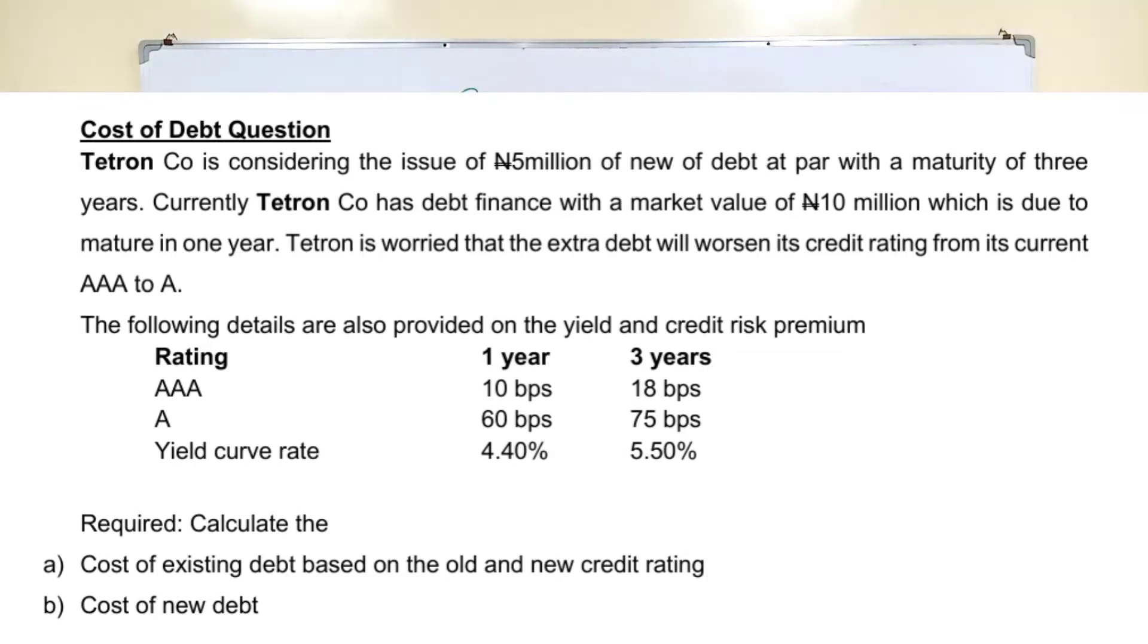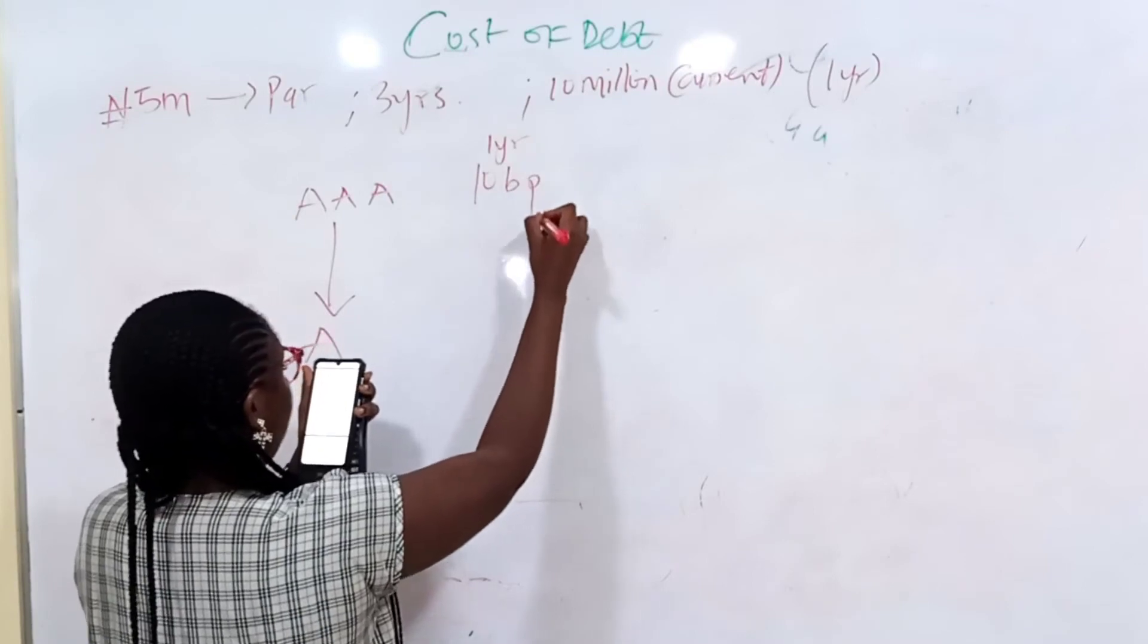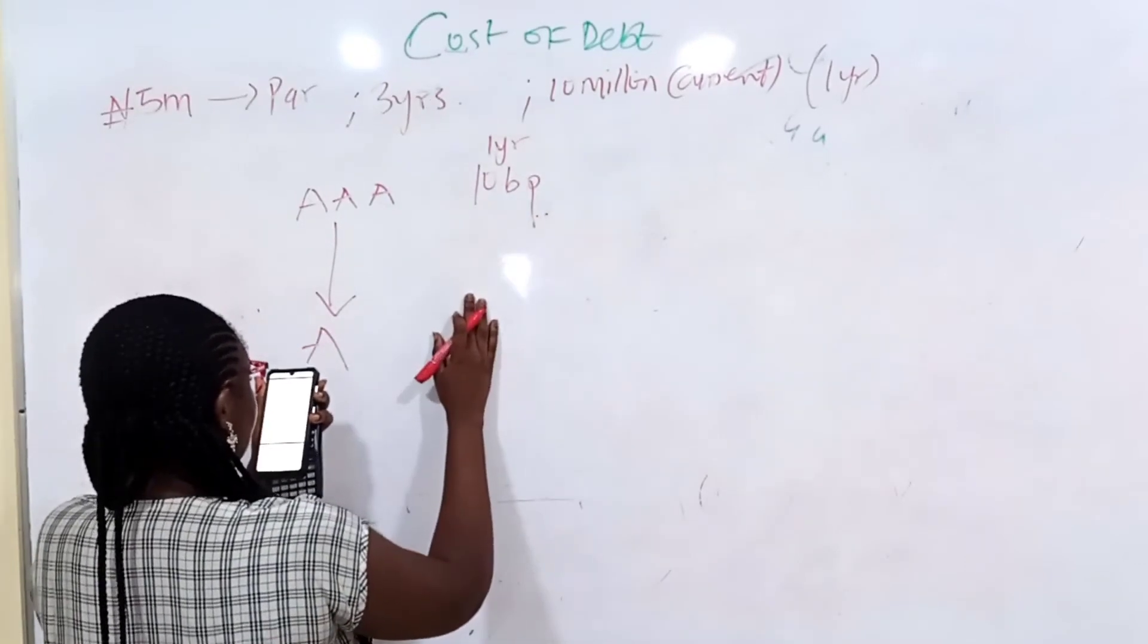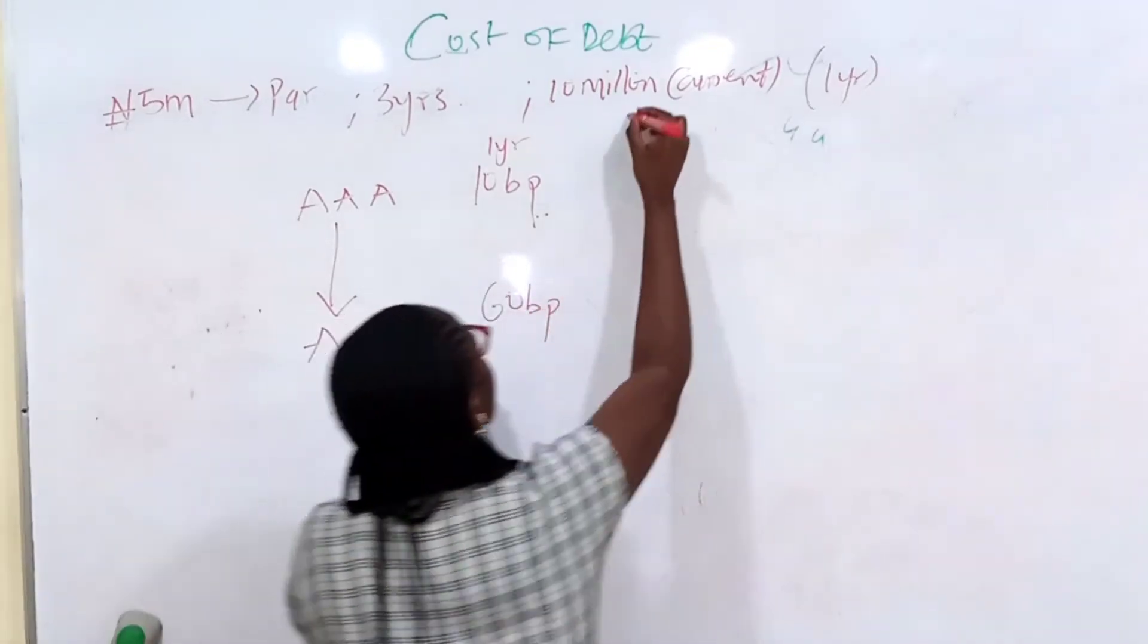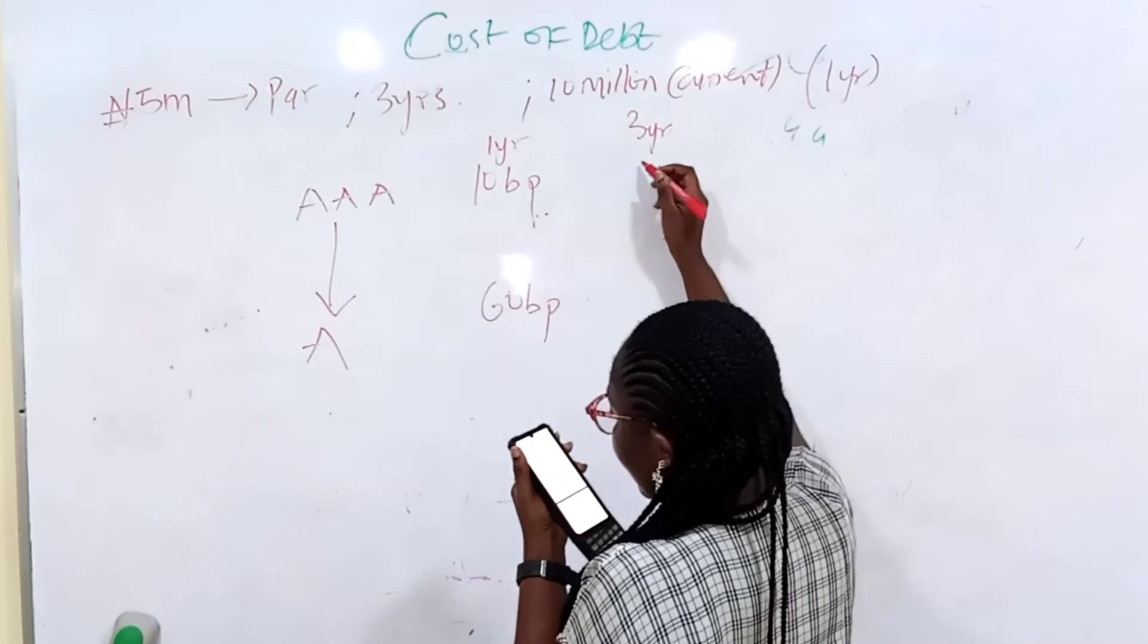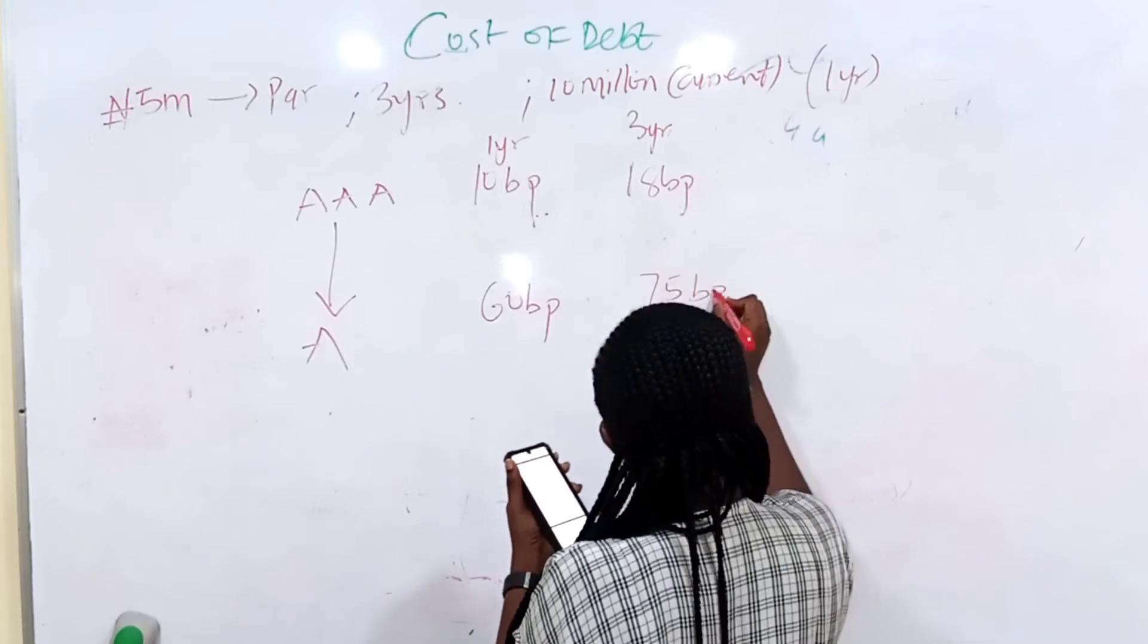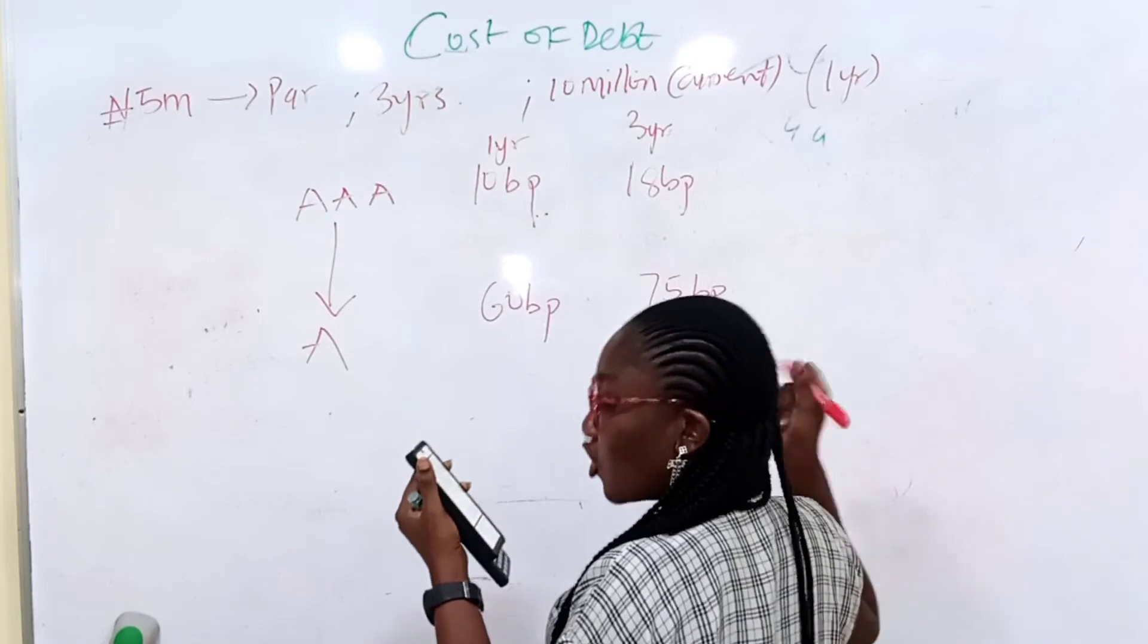They said Tetron is worried. They are worried that the extra debt will worsen the credit rating. Once you hear that credit rating, they are talking of a capital asset pricing model which I explained earlier. They are worried that it will worsen the credit rating from its current of AAA. It will worsen towards A. Now they said the following values are also provided on the yield and credit risk premium. The rating of AAA, they put it under 1 year, 10 basis points. Then the rating of A, 1 year they give it 60 basis points. Then under 3 years, this is already telling me that the 3 years one is for the new debt you want to collect.